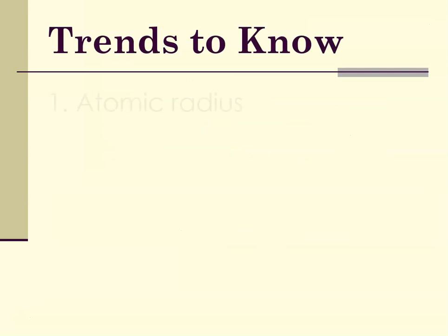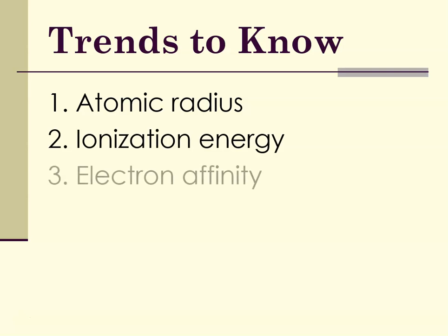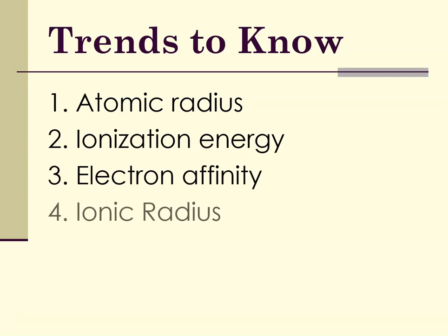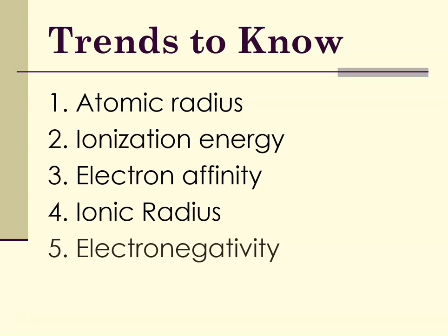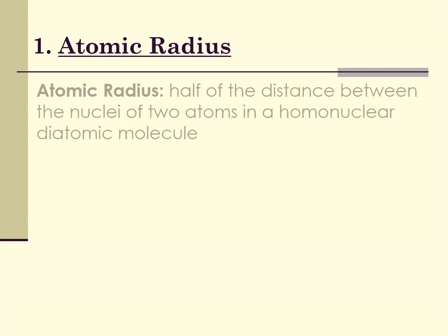So what are the five trends? Atomic radius, ionization energy, electron affinity, ionic radius, and electronegativity. We'll take them one at a time, starting with atomic radius.